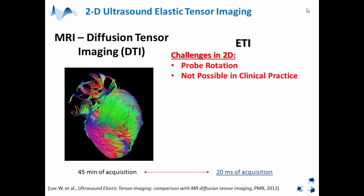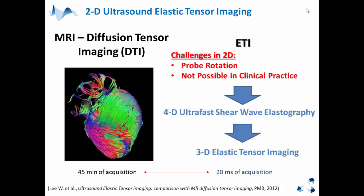However, in 2D, we still have a challenge, since we need to rotate the probe in order to create a shear wave velocity profile and access tissue elastic anisotropy — which is just not realistic in clinical practice. Our group last year introduced 4D ultrafast shear wave velocimetry, and with this technique, we opened a new window to apply the concept of elastic tensor imaging in 3D.